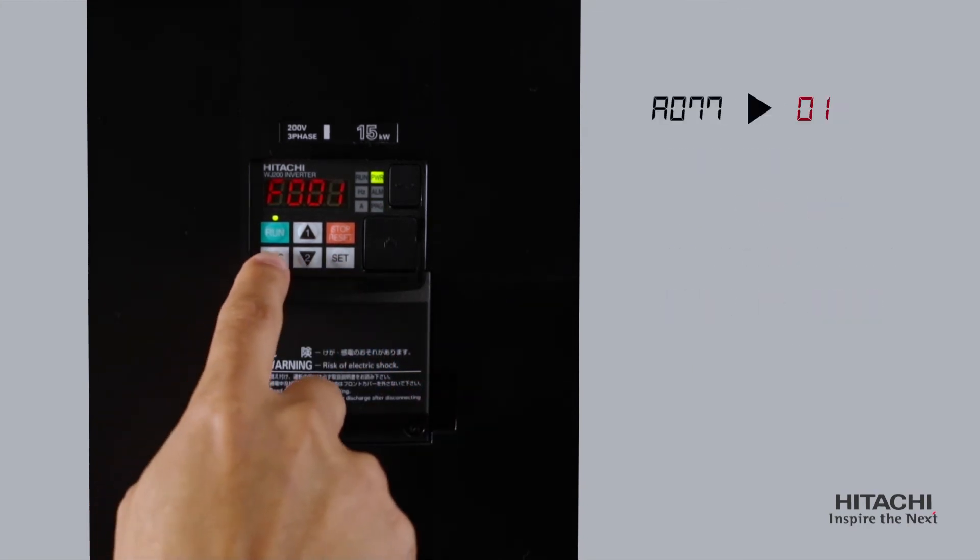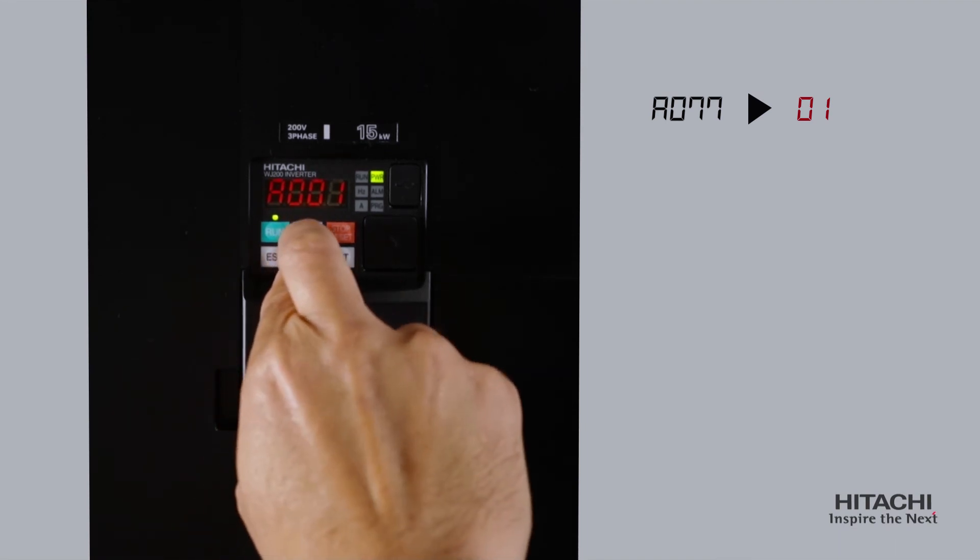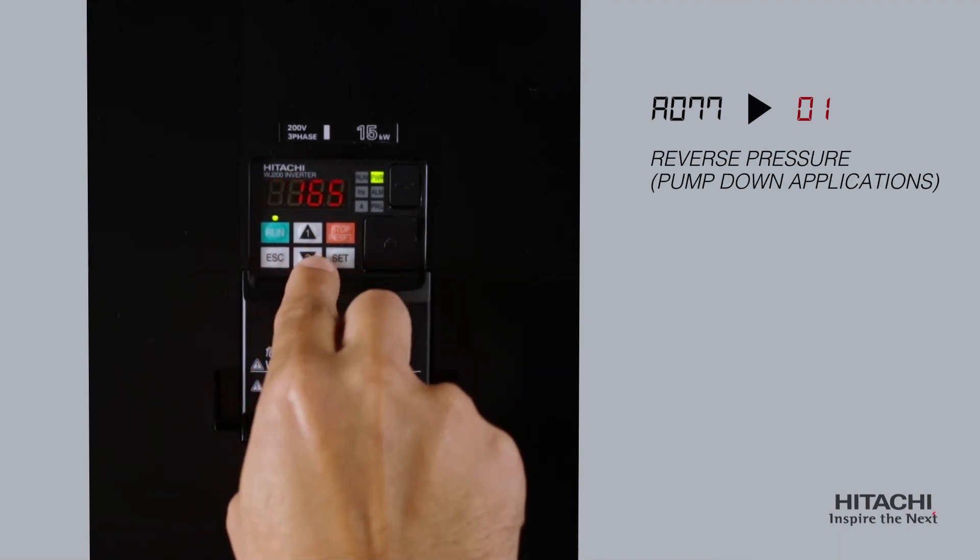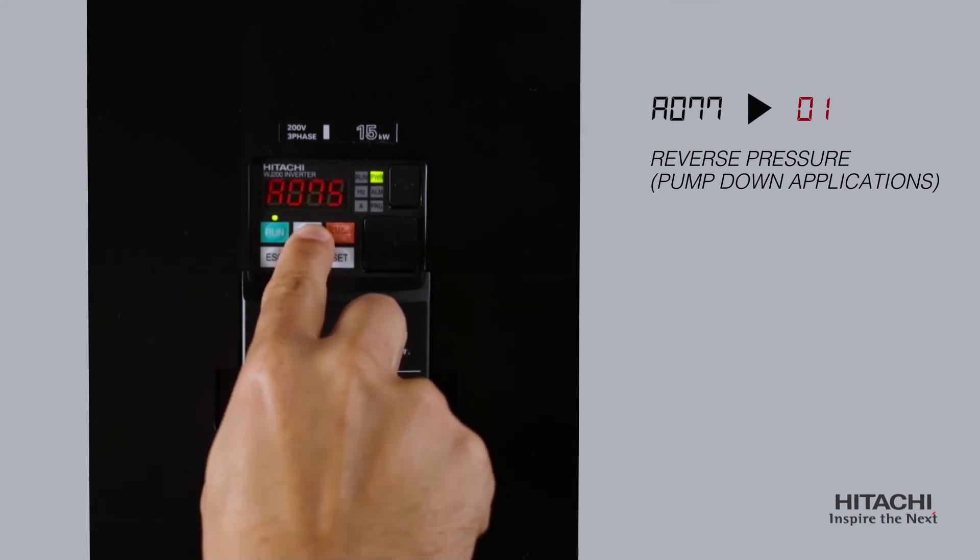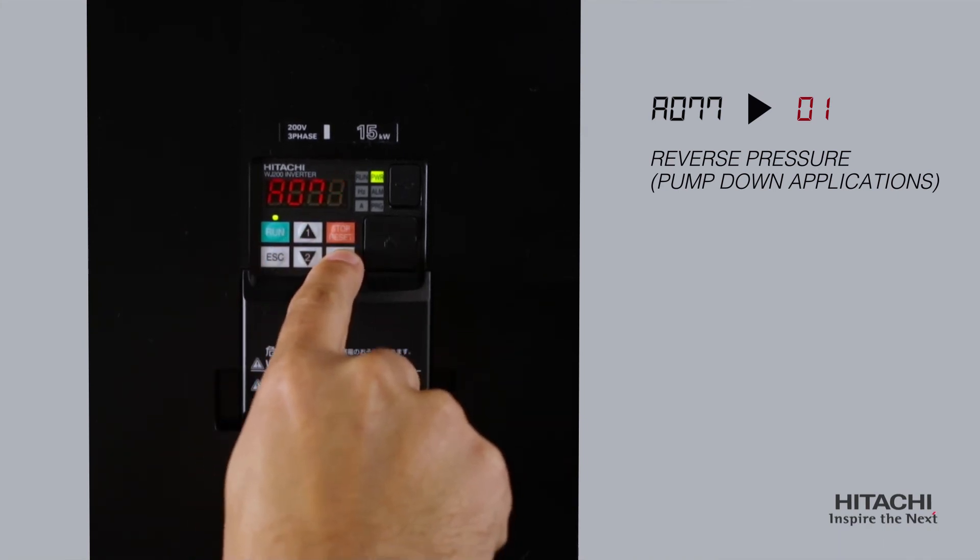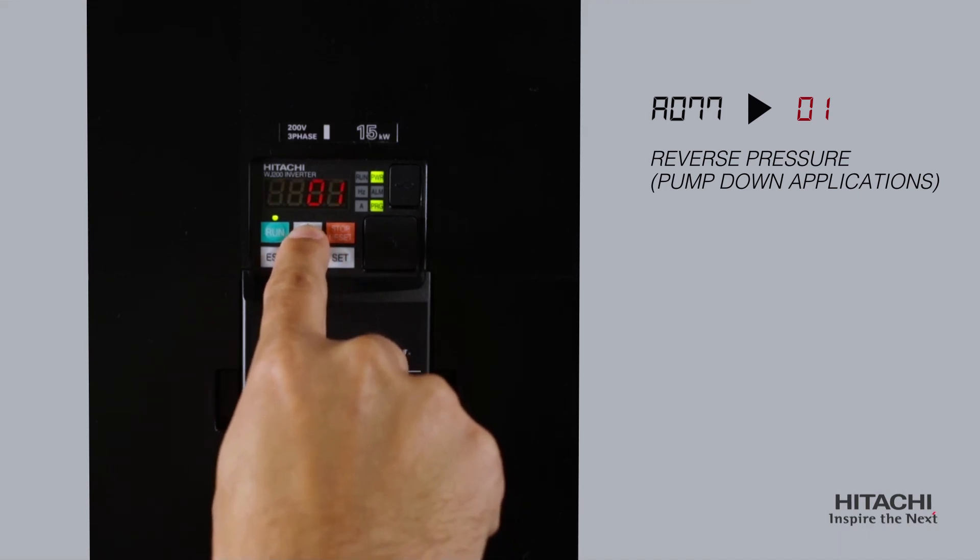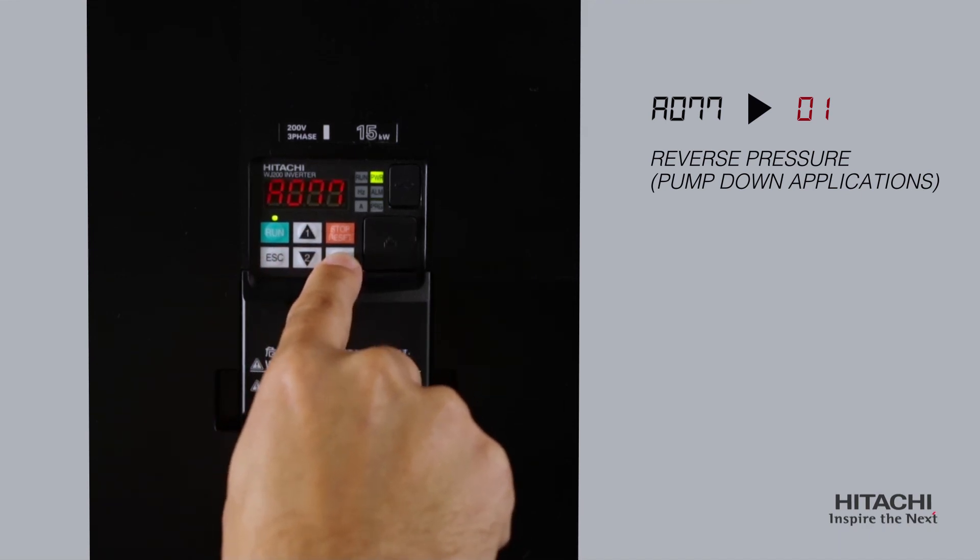Set A77 to 01 to reverse the pressure or for pump down applications. This will cause the inverter to operate in a mode required to keep a water level down to a set point in a catch basin system, such as a retaining pond.